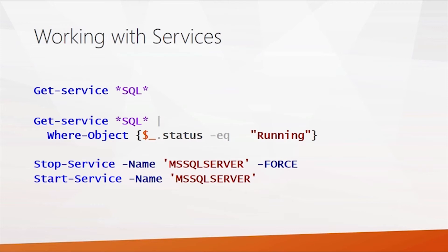If you want to stop or start a service, you can use the cmdlets shown here. The Stop-Service cmdlet stops the service — you give it the service name you want, and if you want it to stop immediately you can add the force parameter. If you want to start the service, you use the Start-Service cmdlet and pass in the name of the service you want to start.